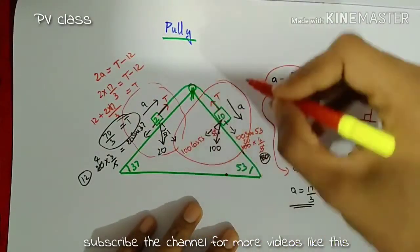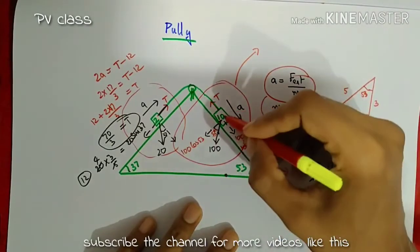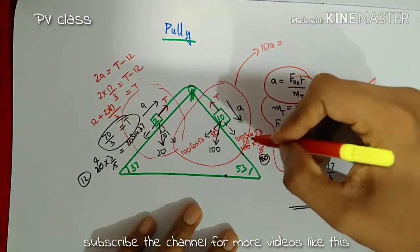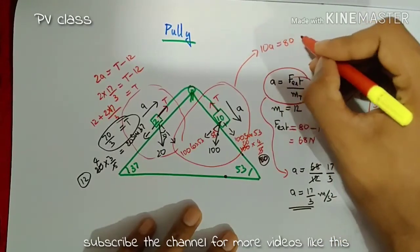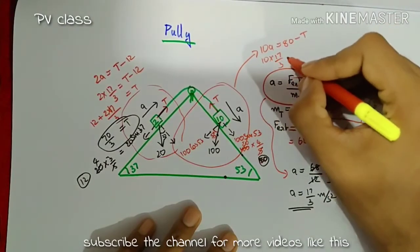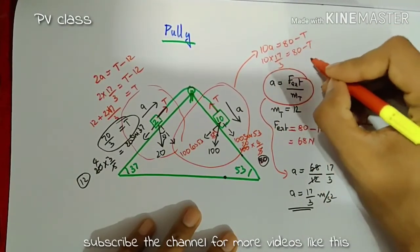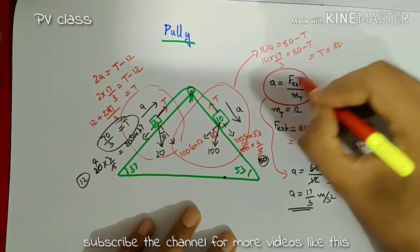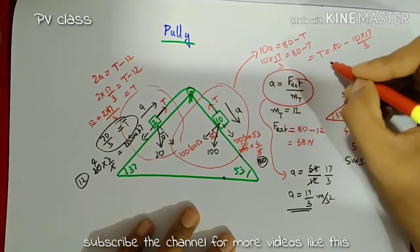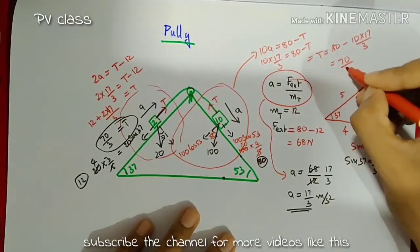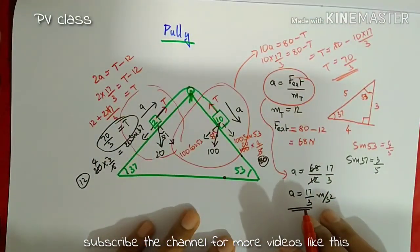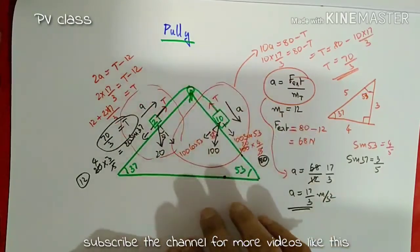For verification using the 10 kilogram mass free body diagram: the net force equation is 10a equals 80 minus T. Substituting a equals 17/3, we get 80 minus 10 into 17/3, which also gives T equal to 70 by 3 Newton. Both methods confirm the same answer, and this is how we solve a complicated pulley problem.